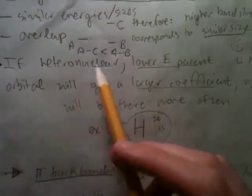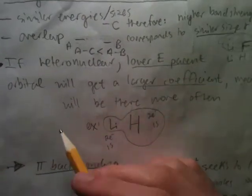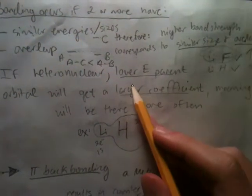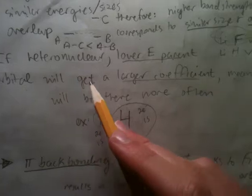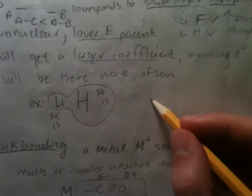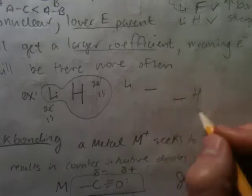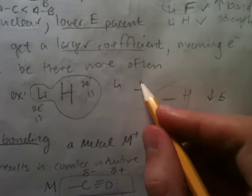Now, what if we have a heteronuclear combination, such as lithium hydride? The lower energy parent orbital will get a larger coefficient, meaning the electrons will be there more often. So for lithium and hydrogen, hydrogen has the lower energy and is one of the contributing atoms. As the lower energy parent, it will get more of the electrons — more of the electrons from lithium.